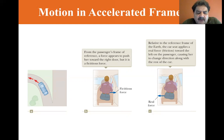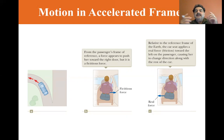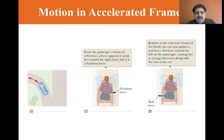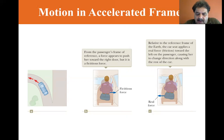Recall from the lecture, we talked about wet clothes spinning in the spin cycle of the washing machine. There are holes in the washing machine and the water is free to exit, whereas the clothes are constrained by the walls of the washing machine drum.